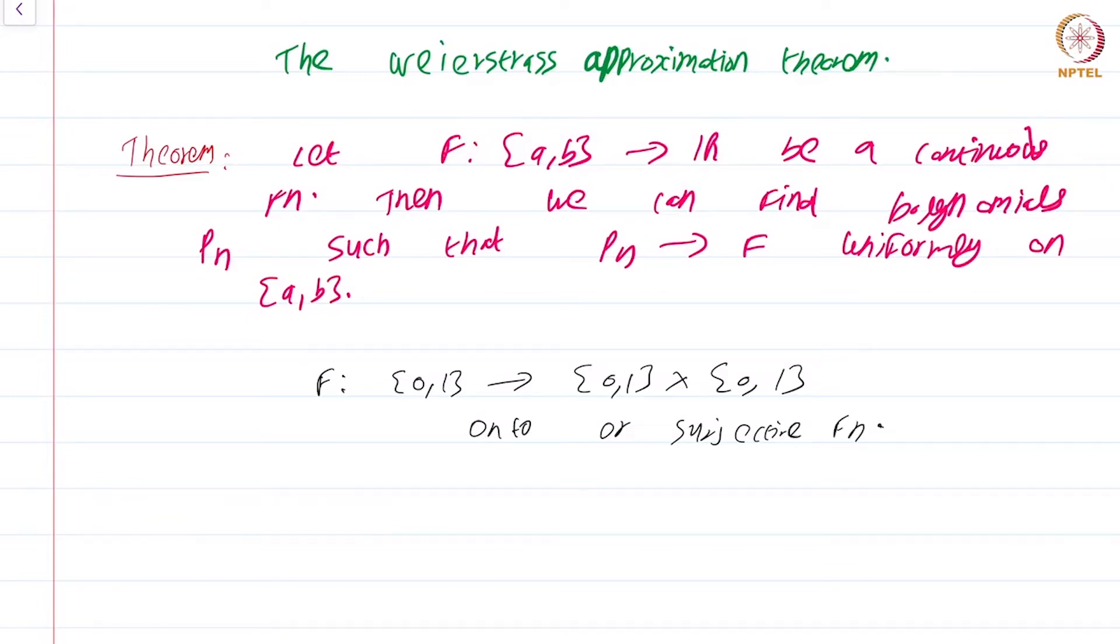This is called a space-filling curve. Continuous functions can be extremely bizarre, so to expect that you can approximate any bizarre continuous function by polynomials—you can understand why this theorem is so powerful and useful. We can deal with extremely bizarre and complicated objects using extremely simple polynomials.